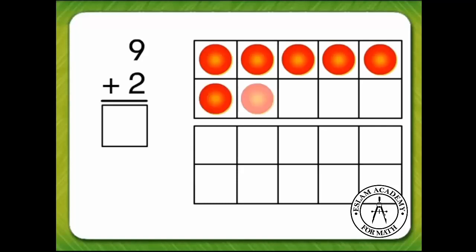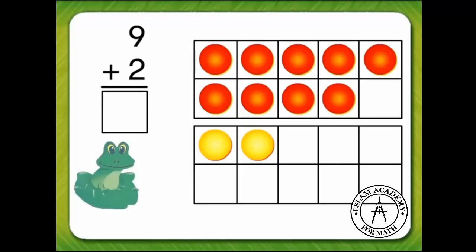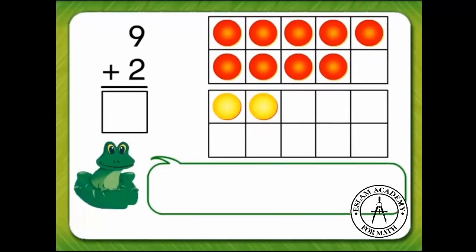Let's put 9 red counters on the top 10 frame and 2 yellow counters on the bottom 10 frame to show 9 plus 2. We can make 10 to help us add. Let's listen to Frog's Hopping Good Tips.